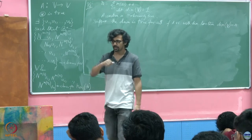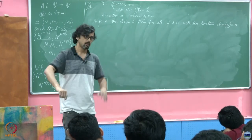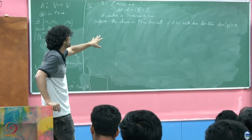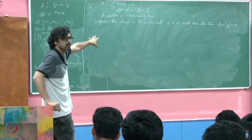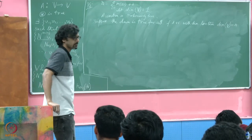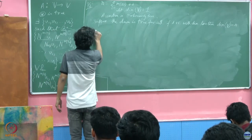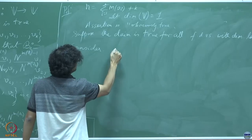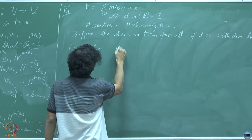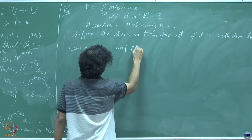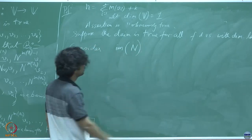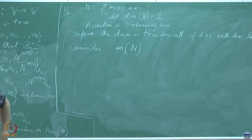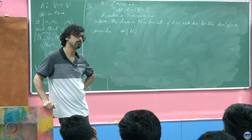Now we are going to make a very special choice of a vector space whose dimension fits this criteria. Consider the image of N. What can you say about the dimension of the image of N? N is nilpotent, remember?